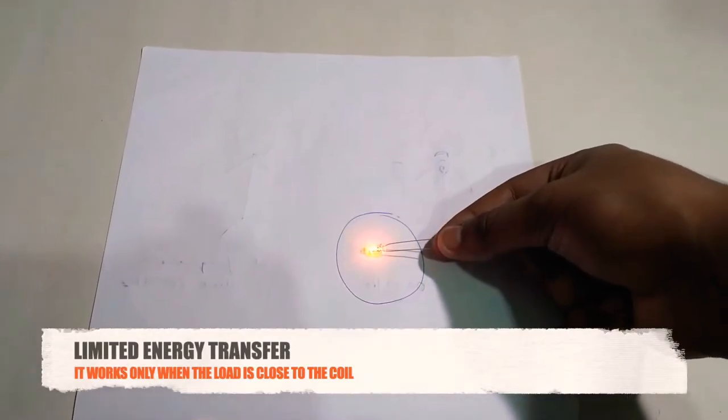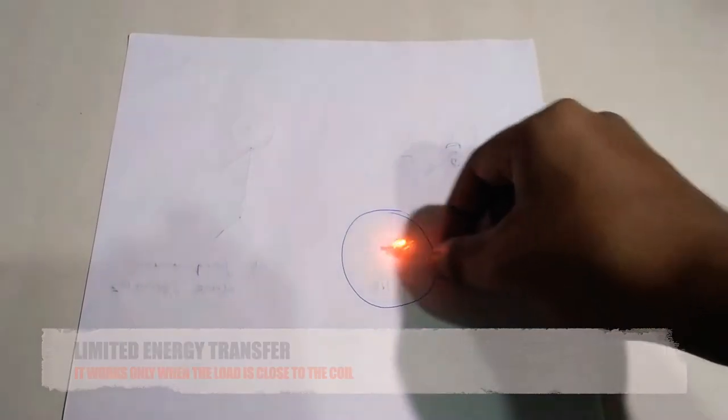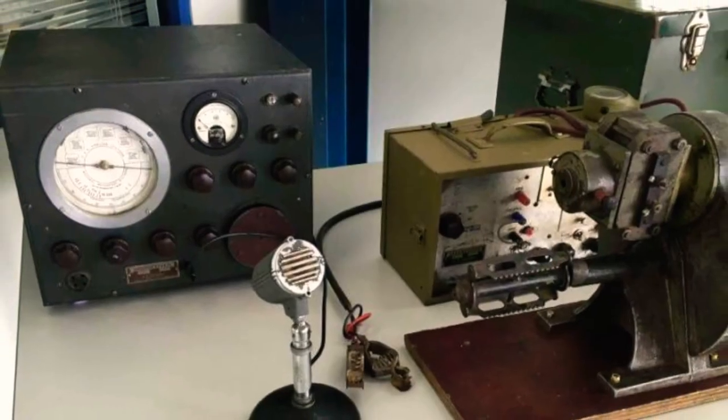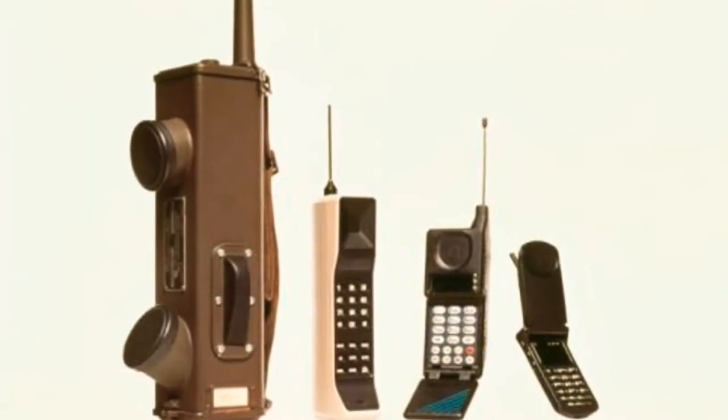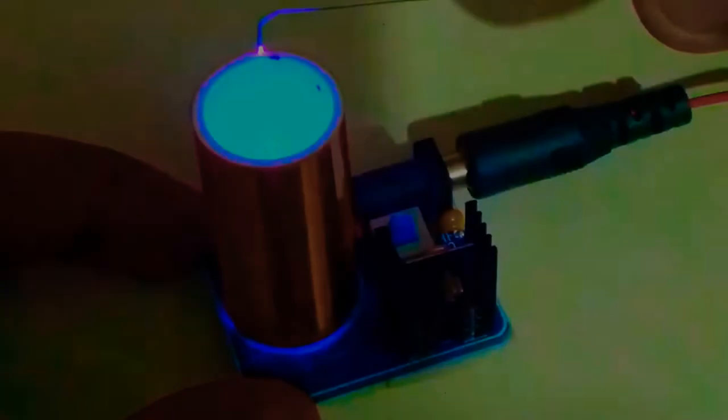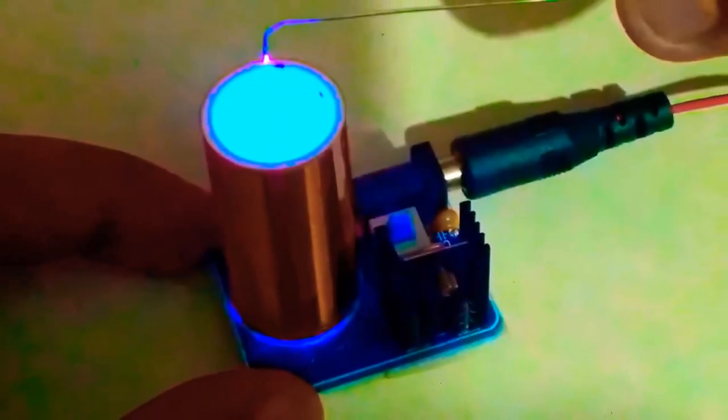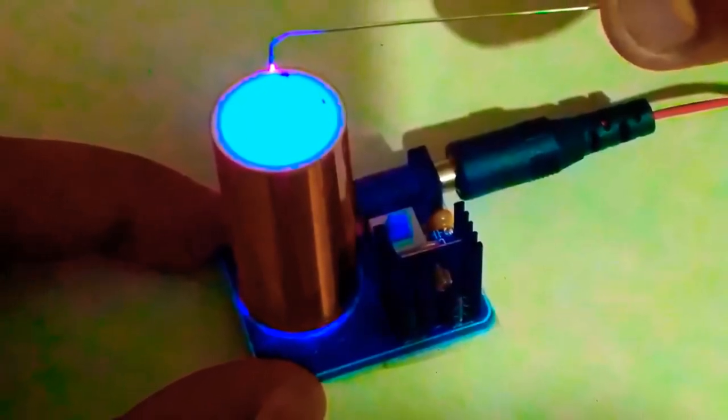Nikola Tesla believed he could wirelessly power the entire world with his new invention, but it was not possible due to the limited amount of energy transfer. His idea gave birth to long-distance communications like radios and mobile phones. Let's get started with our actual video of our mini Tesla coil kit.